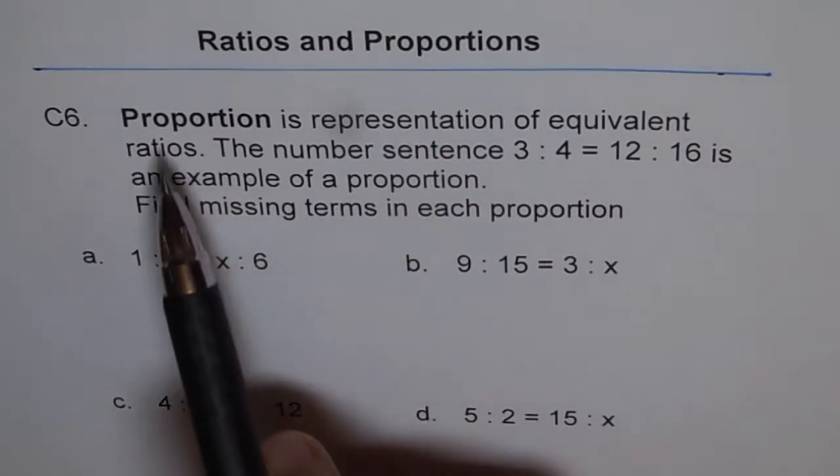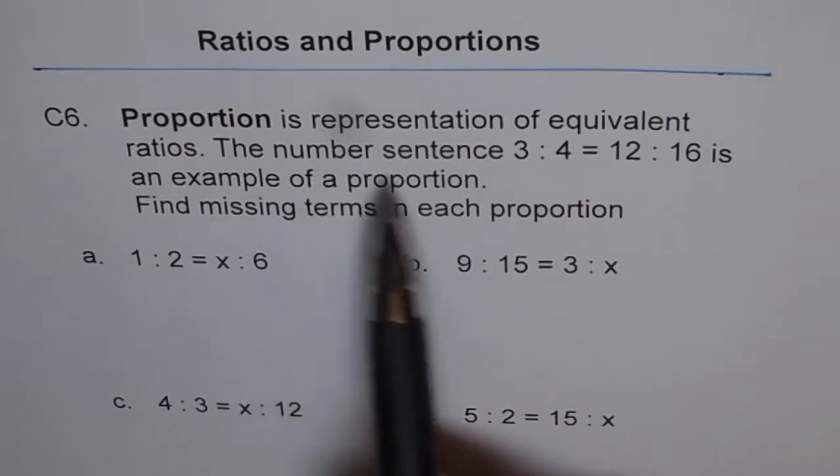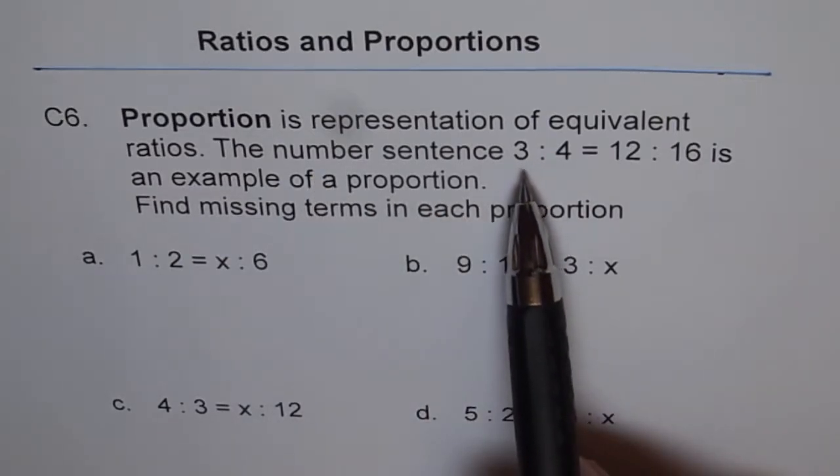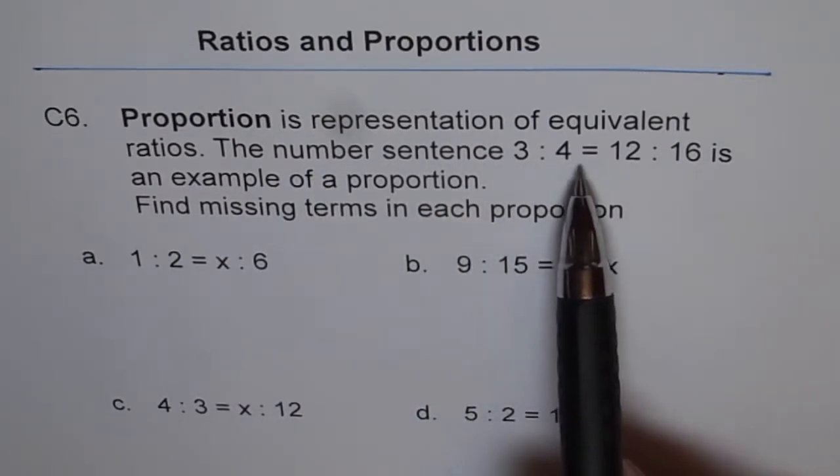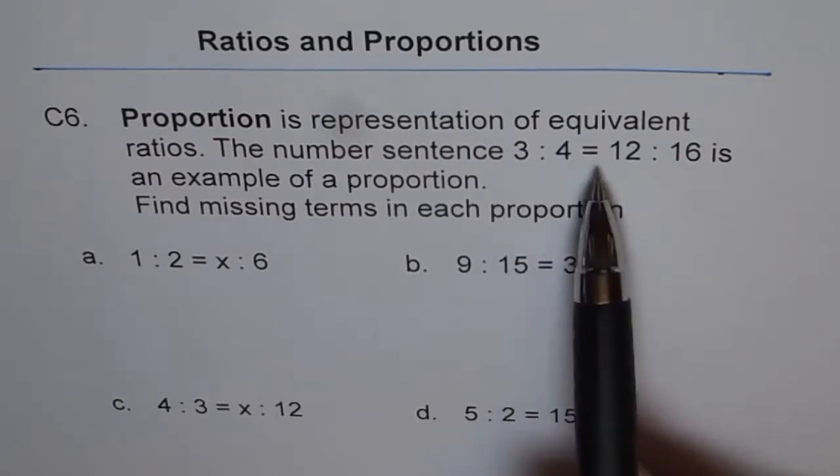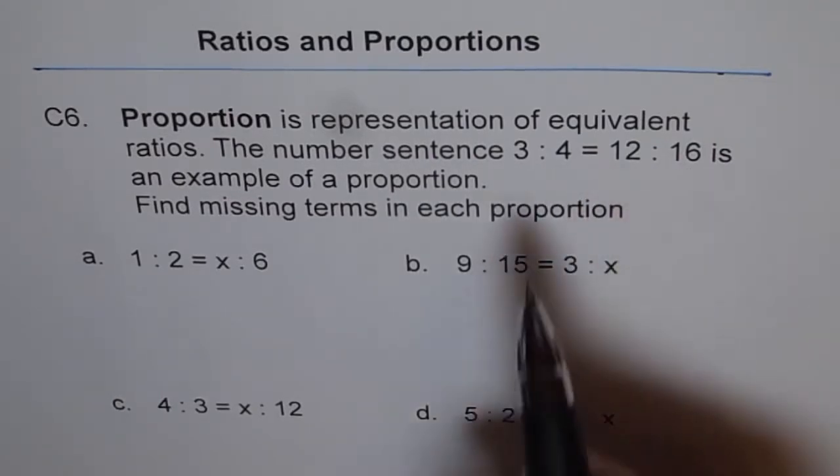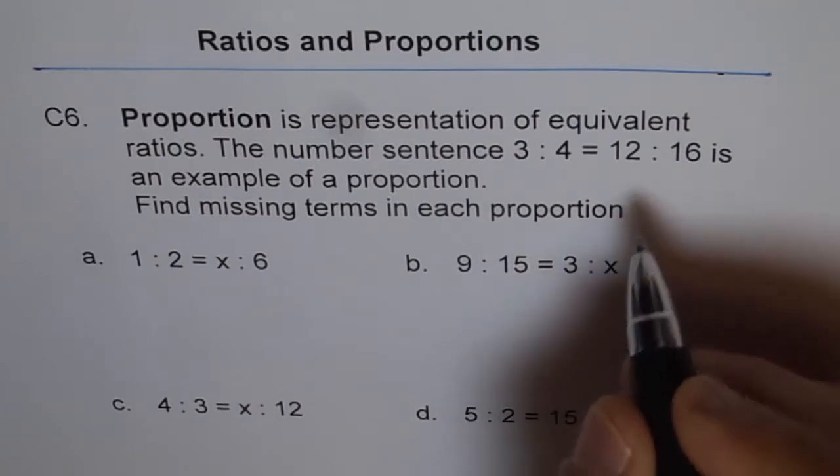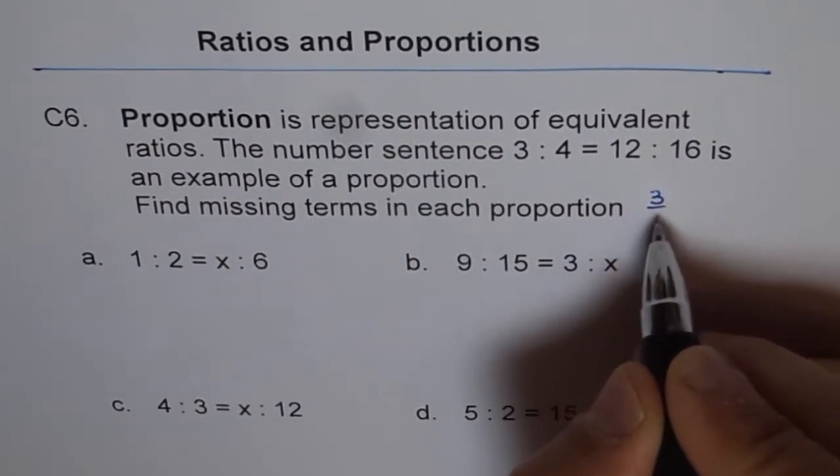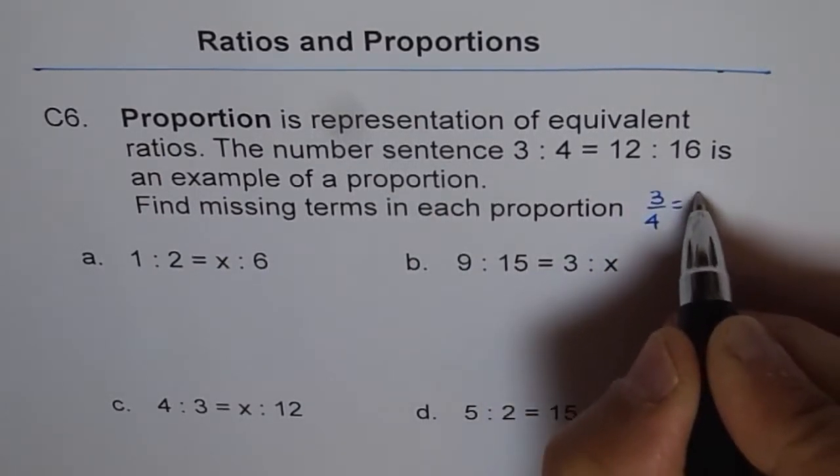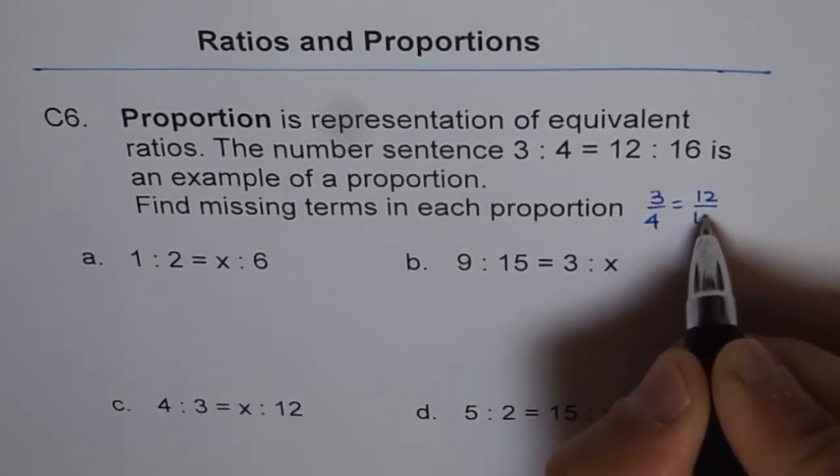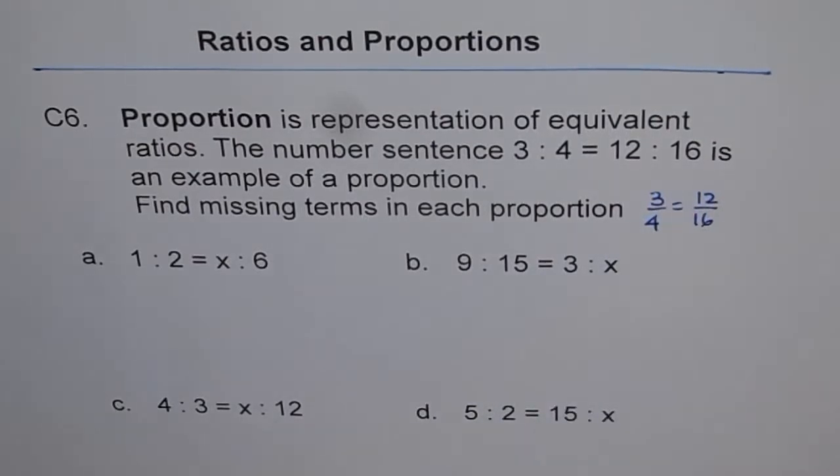So whenever we talk about proportion, we are talking about a number sentence, which is written as 3 is to 4 equals to 12 is to 16. It could be written in fractions also. We could write this as 3 over 4 equals to 12 over 16. Both ways it is good enough.